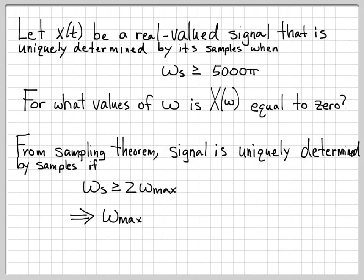If we rearrange this inequality, we can rewrite that as ωmax has to be less than or equal to ωs over 2. In this case, we were told that our sampling frequency was 5000π, so 5000π over 2 is 2500π radians per second.